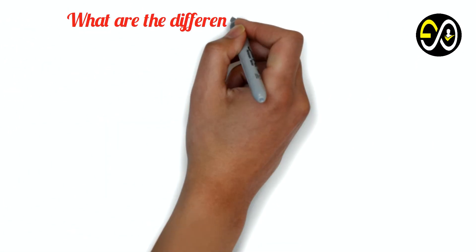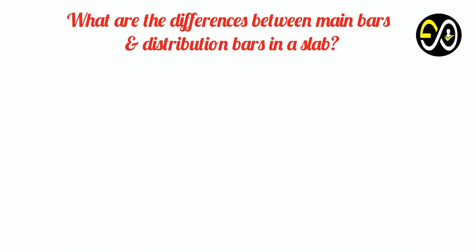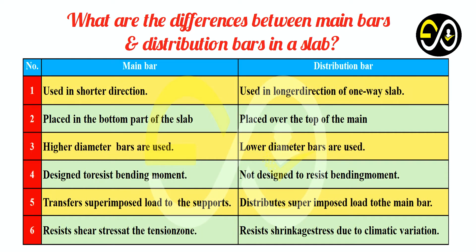What are the differences between main bars and distribution bars in a slab? 1. Used in shorter direction. Used in longer direction of one-way slab. 2. Placed in the bottom part of the slab reinforcement. Placed over the top of the main bar.